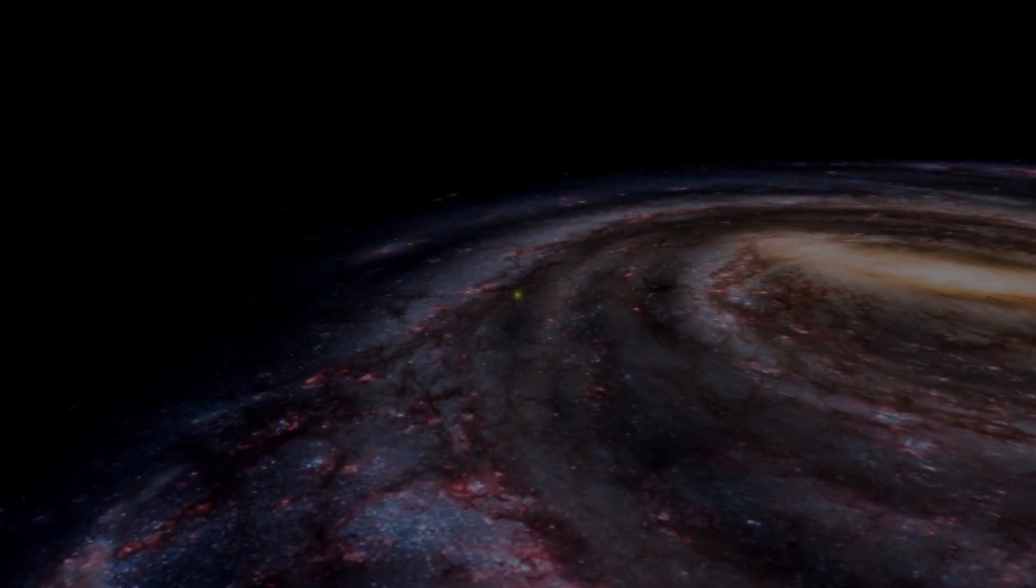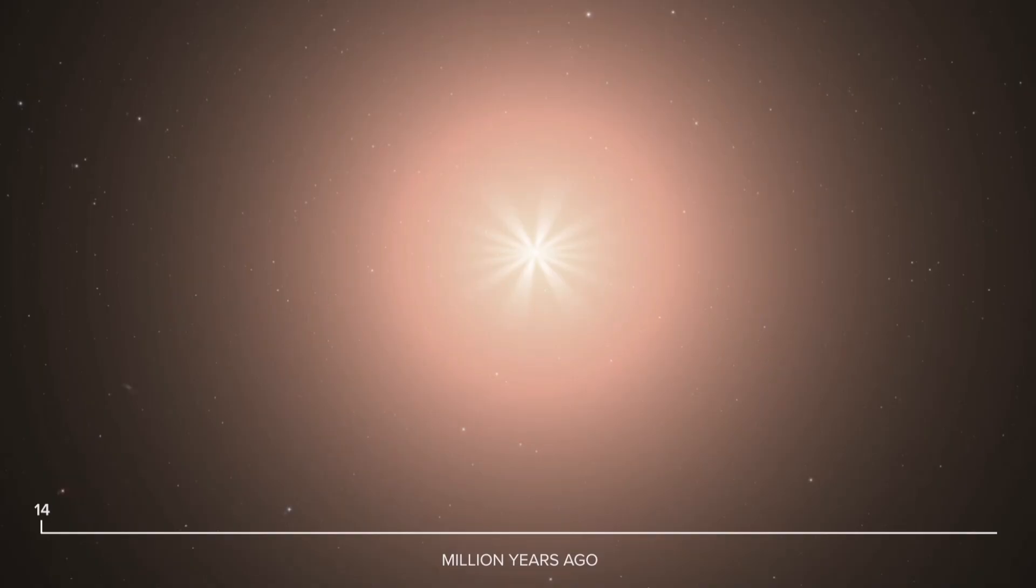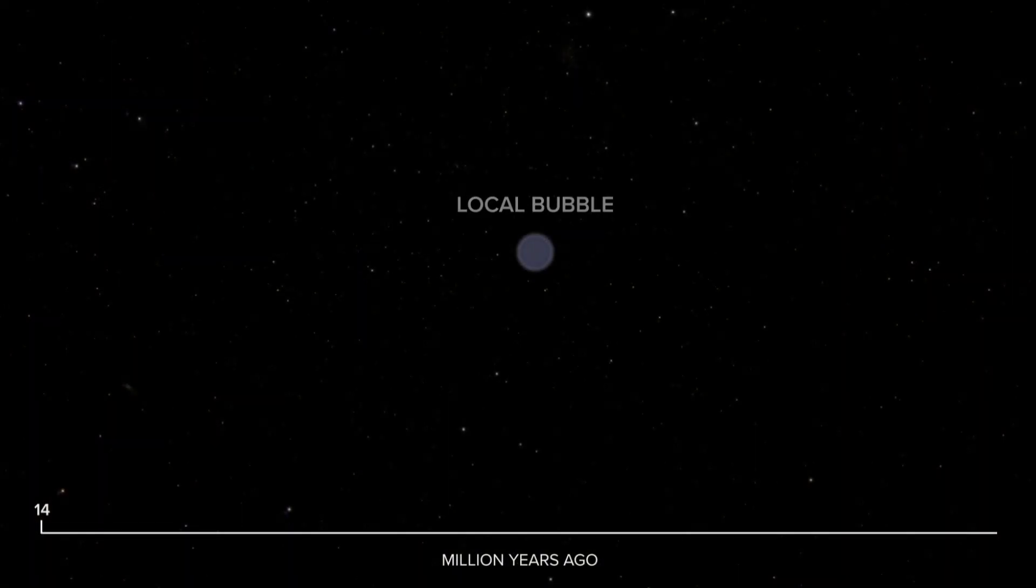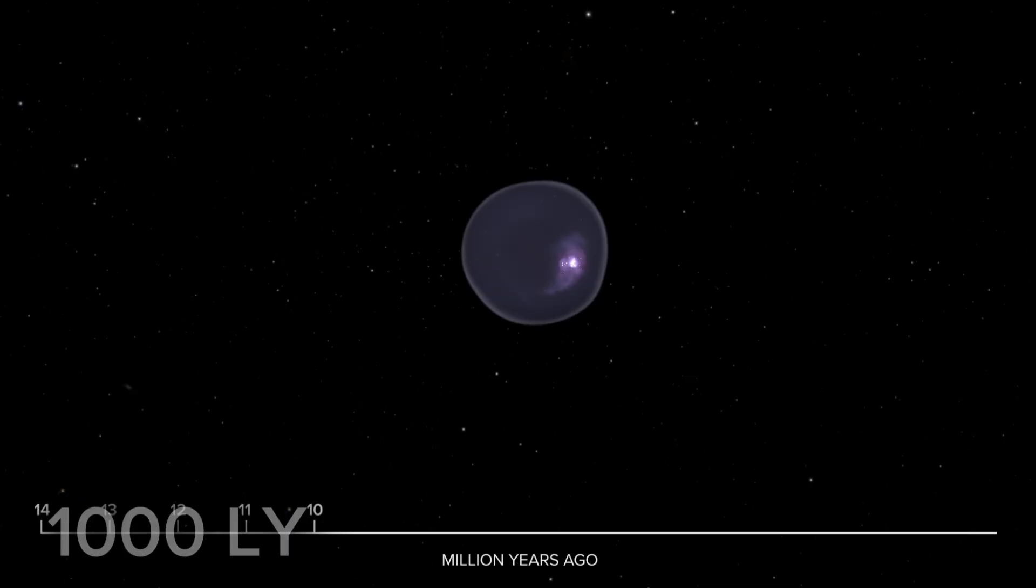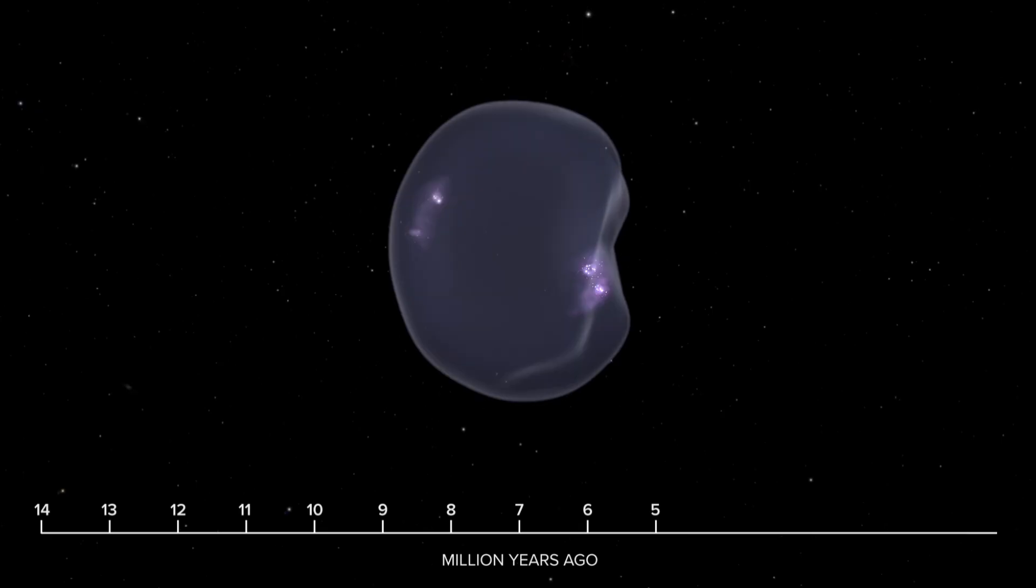Our sun is located in a region of the Milky Way called the Orion Arm. Research shows that the sun and the entire solar system are surrounded by a vast, hot, low-density bubble of gas known as the local hot bubble. This bubble, roughly 1,000 light-years across and shaped like a stretched oval, extends over a large area around us.